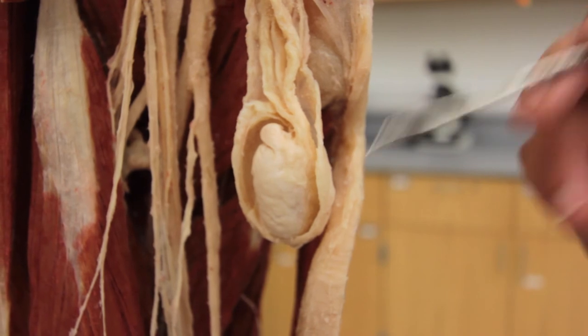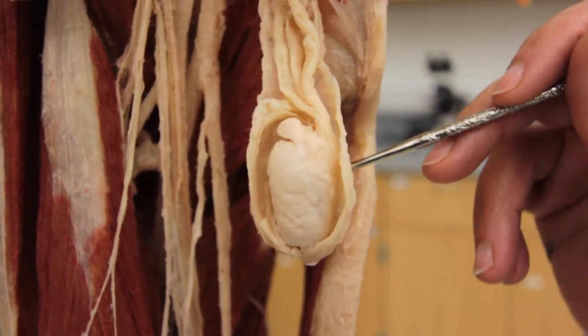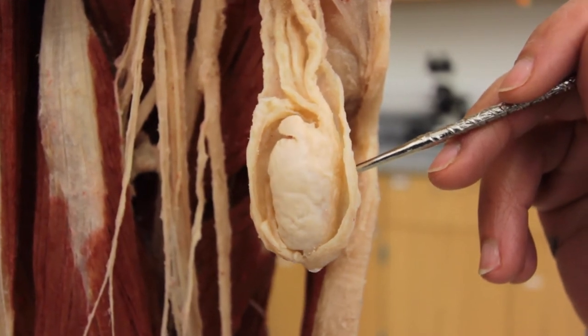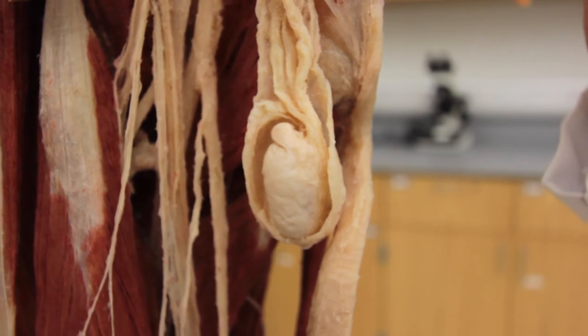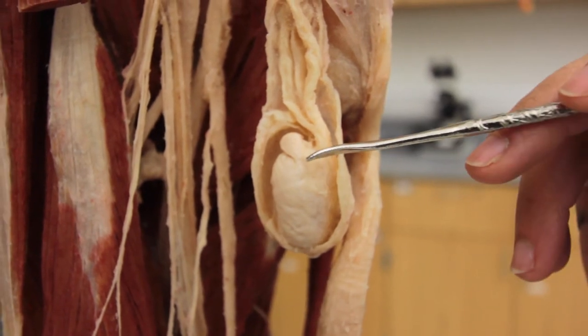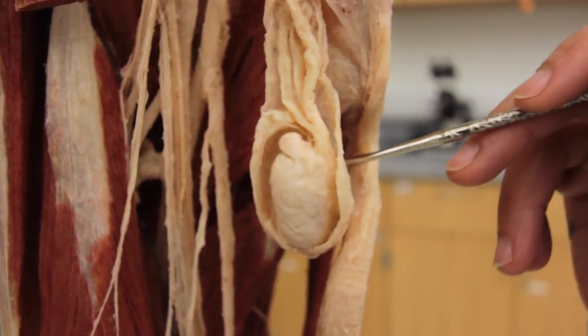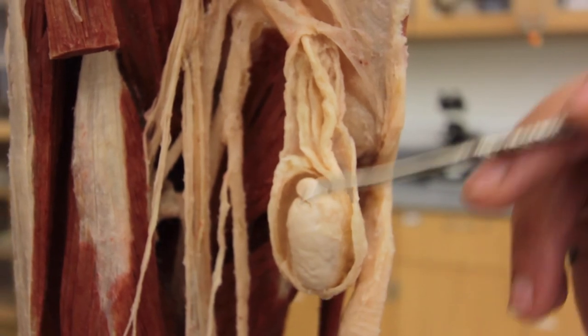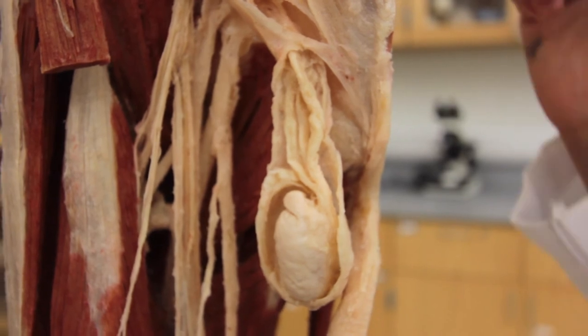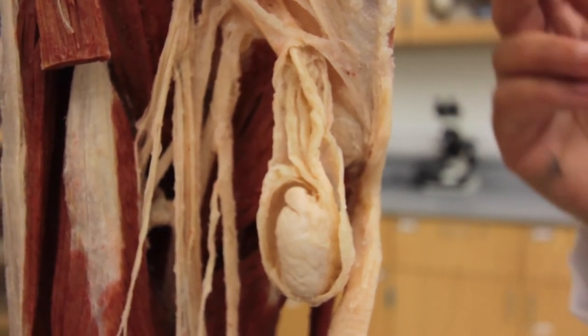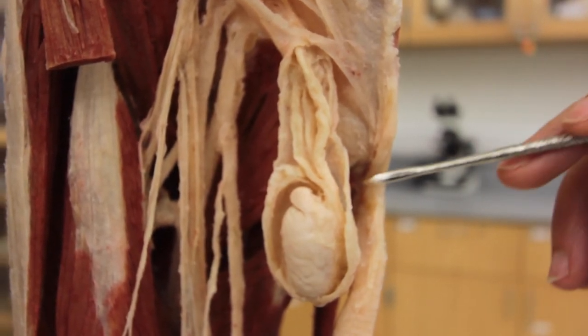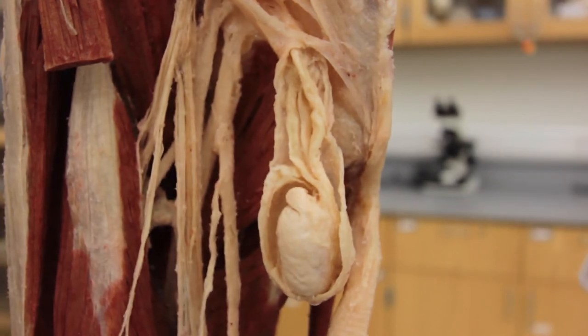The reason is physiological because the testes cannot function. Their function is the production of sperms. They cannot function properly inside the body cavity because of the high temperature. The body temperature is really hot for the testes. So they have to stay in a colder environment. They will be placed outside the body. If the testes remain inside the body cavity, the end result would be their sterility. There wouldn't be any production of sperms. That's the reason why we have this scrotal sac, why we have all this arrangement.